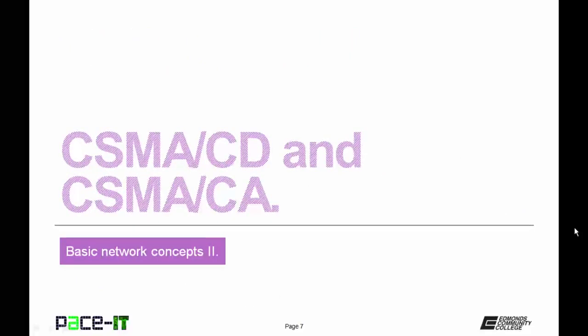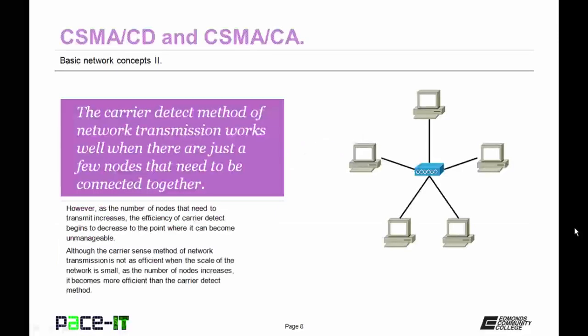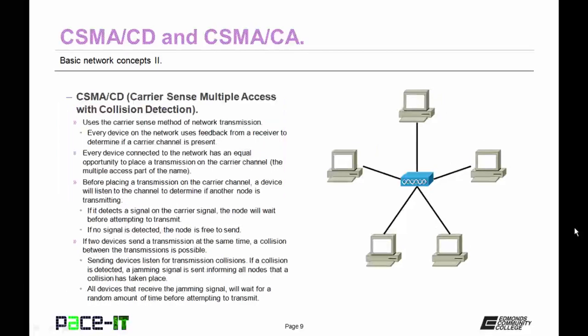That logically leads us into CSMA/CD and CSMA/CA. The carrier detect method of network transmission works well when there are just a few nodes that need to be connected together. However, as the number of nodes that need to transmit increases, the efficiency of carrier detect begins to decrease to the point where it can become unmanageable. Although the carrier sense method of network transmission is not as efficient when the scale of the network is small, as the number of nodes increases, it becomes more efficient than the carrier detect method.